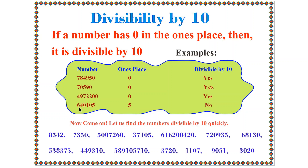The next number is 64015. Its 1s place is 5. For a number to be divisible by 10, its 1s place must be 0. Since the 1s place is 5, it is not divisible by 10. Now let us find the numbers divisible by 10 quickly — you can do it very easily.